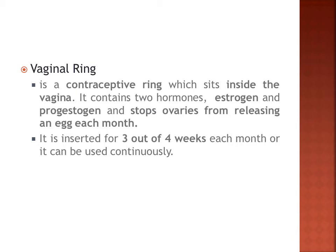Next we have the vaginal ring. The vaginal ring is a contraceptive ring that sits inside the vagina. It contains two hormones — estrogen and progestogen — and stops the ovaries from releasing an egg each month. Just to clarify, the vagina is located at the external part of the female reproductive system, and on the inside is the cervix. The ring is placed only in the vagina.